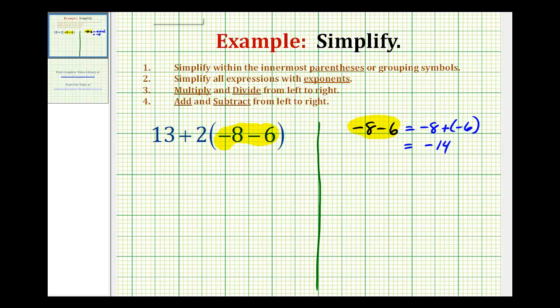So now we can rewrite the given expression as 13 plus two times negative 14. Now notice that we have addition and multiplication, but following the order of operations, we'll need to multiply before we add. So the next step is to determine this product.